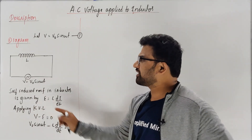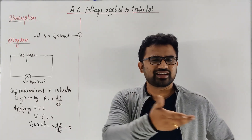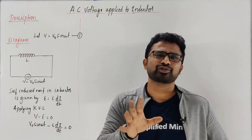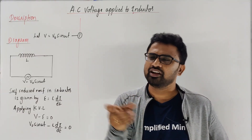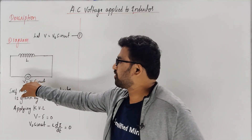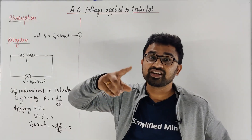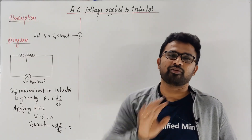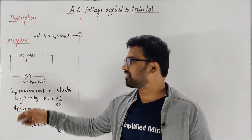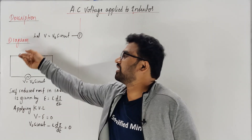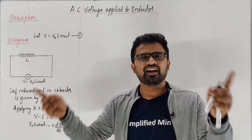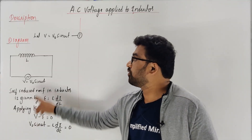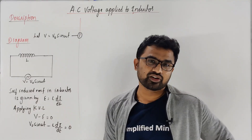Now, using KVL — Kirchhoff's Voltage Law — total voltage considering sign convention is zero. KVL is very simple: total voltage is the sum around the loop. So considering sign convention, V − E = 0, which means V = E. So: V₀ sin(ωt) is the applied voltage. Now, what is instantaneous voltage? At any time t, V is the instantaneous voltage.